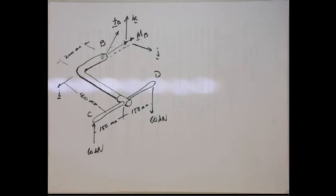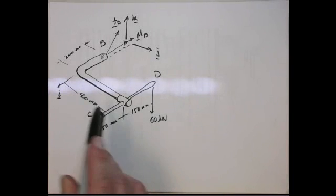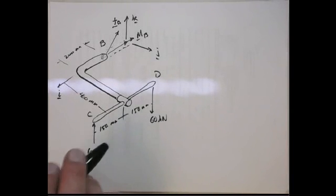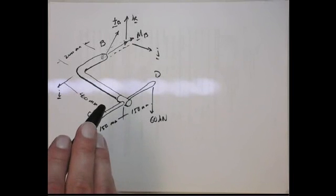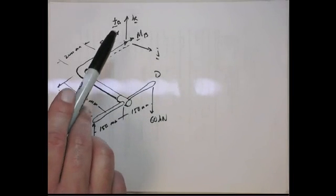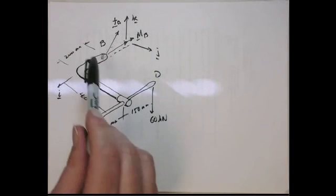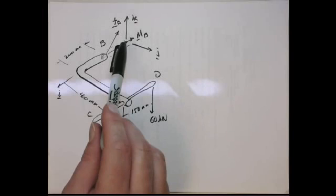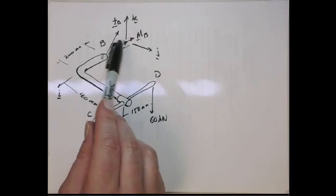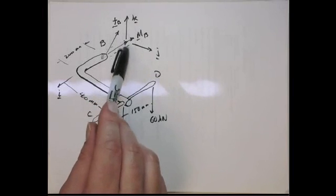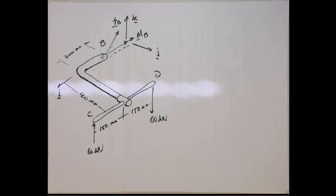This is an equilibrium problem. We can invoke six scalar equations, the three sum of forces and the three sum of moments, and that would satisfy the six scalar unknowns. Or what I would do here is I'm going to write two vector equations, one for sum of forces, one for sum of moments, and I'm going to directly get the force vector and the moment vector out of that.